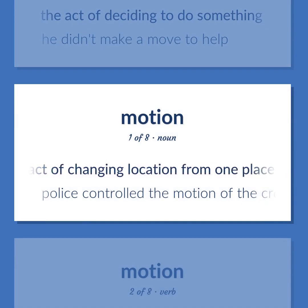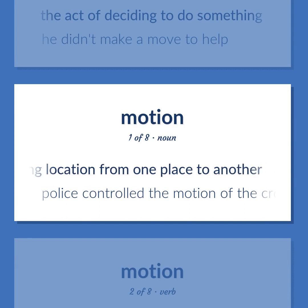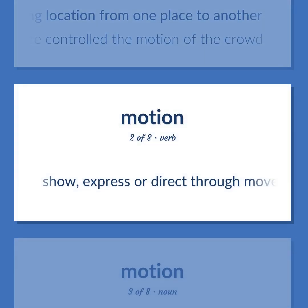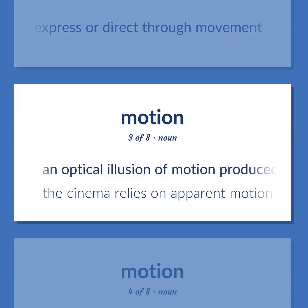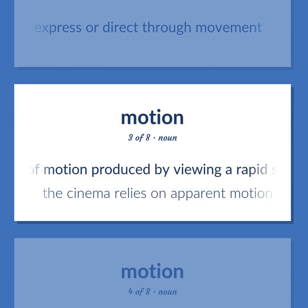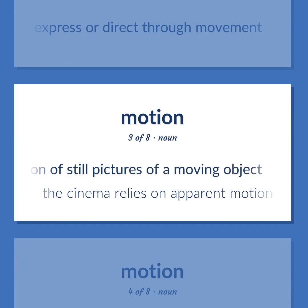Motion: The act of changing location from one place to another — police controlled the motion of the crowd. Show, express or direct through movement. An optical illusion of motion produced by viewing a rapid succession of still pictures of a moving object — the cinema relies on apparent motion.